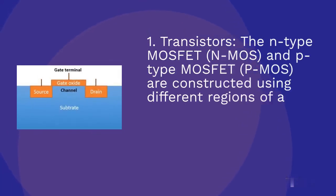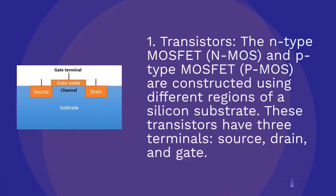Transistors: the N-type MOSFET, N-MOS, and P-type MOSFET, P-MOS, are constructed using different regions of a silicon substrate. These transistors have three terminals: source, drain, and gate.